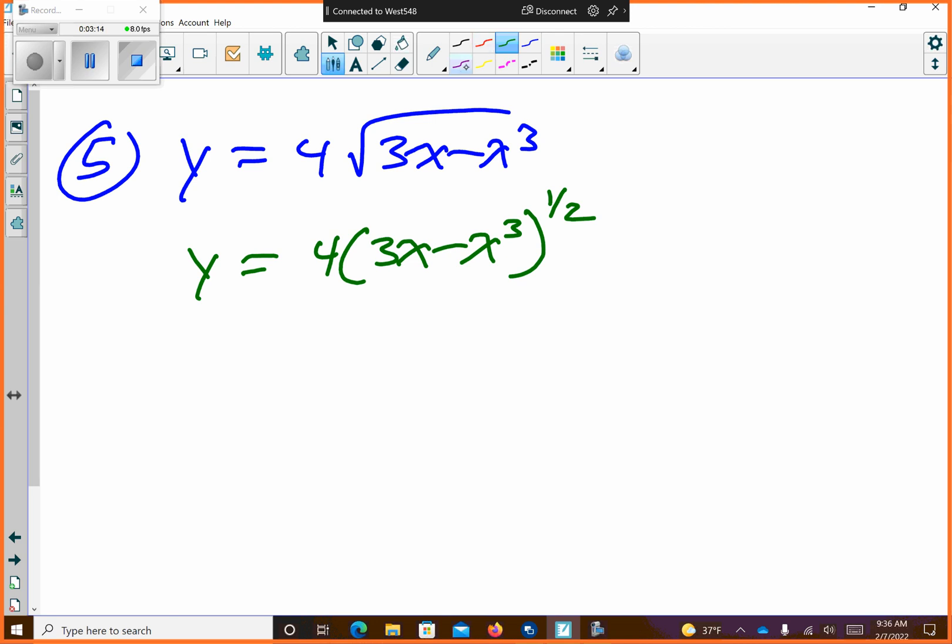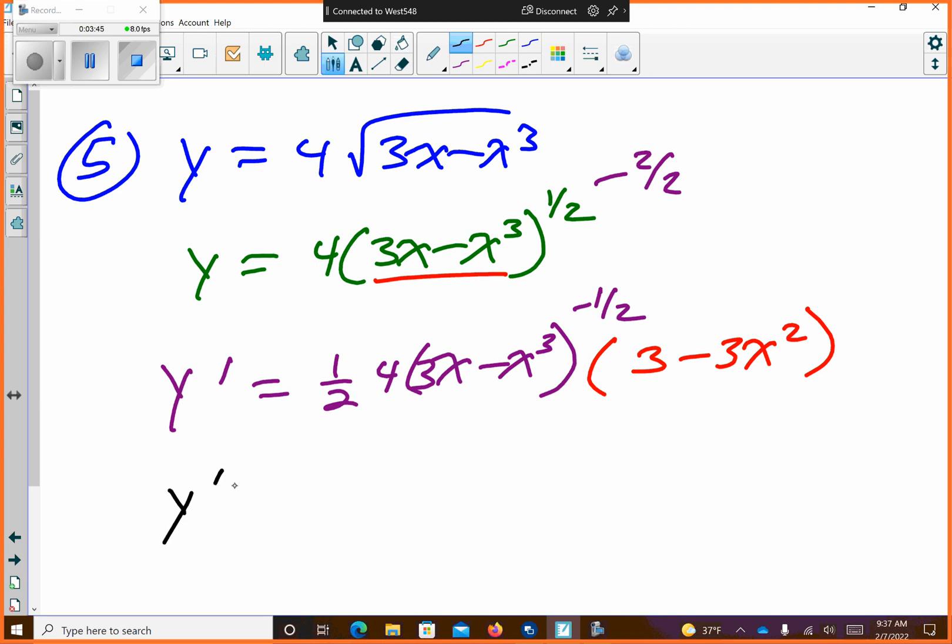So let's do the derivative. So y prime is, bring the one-half out front, times the 4, times the original. The original, we're going to subtract 1 from, which means I'm doing this, so I get negative one-half. Then I'm going to do the derivative of just the inside. So derivative of 3x is 3, derivative of x to the third is 3x squared. So that's done. You could leave that as an answer. If you wanted to clean it up, you could.